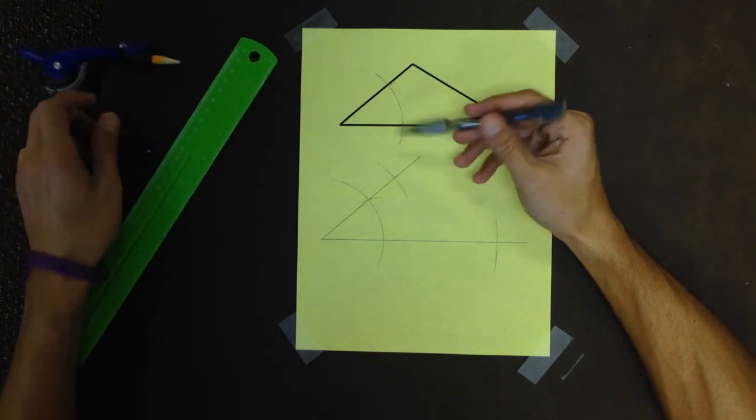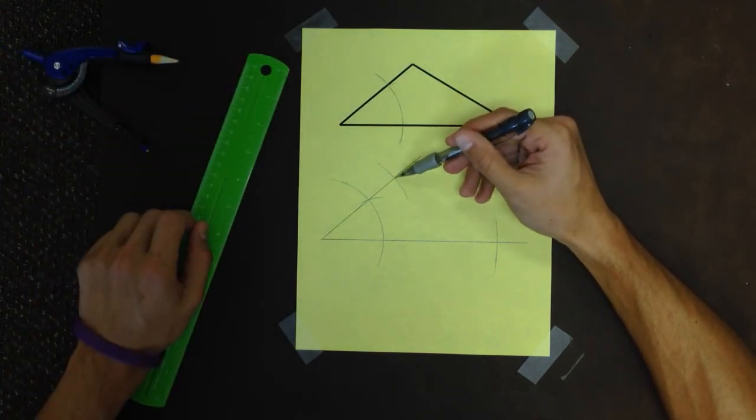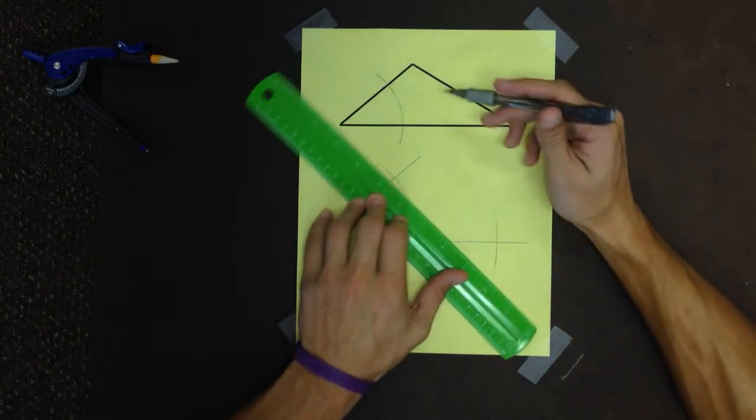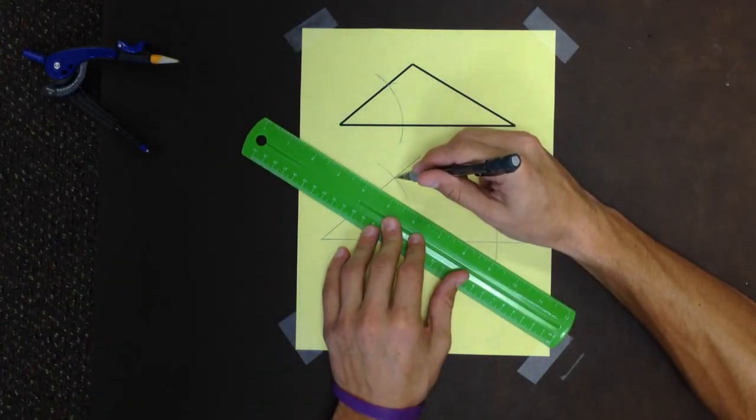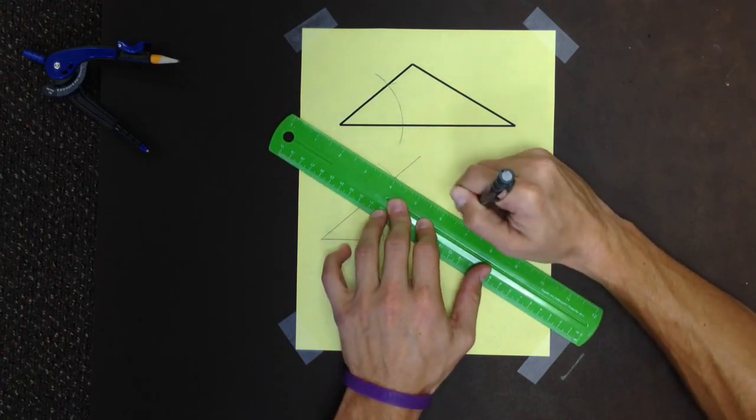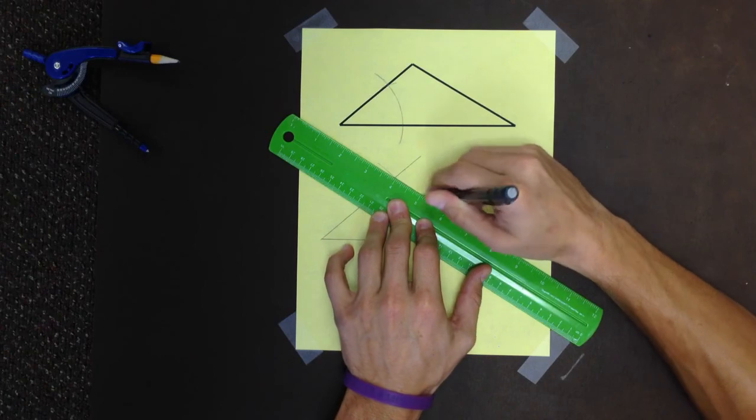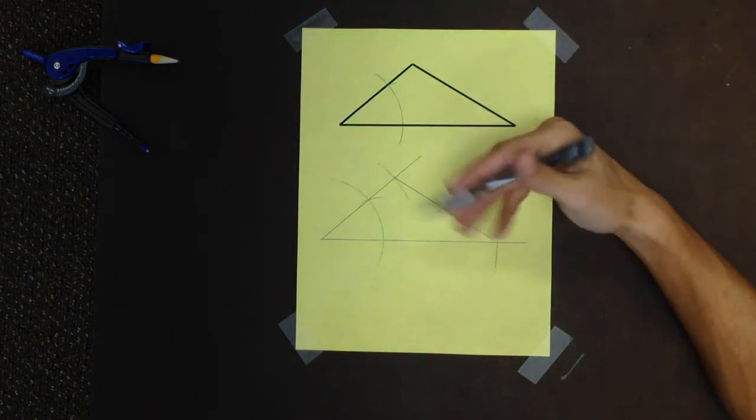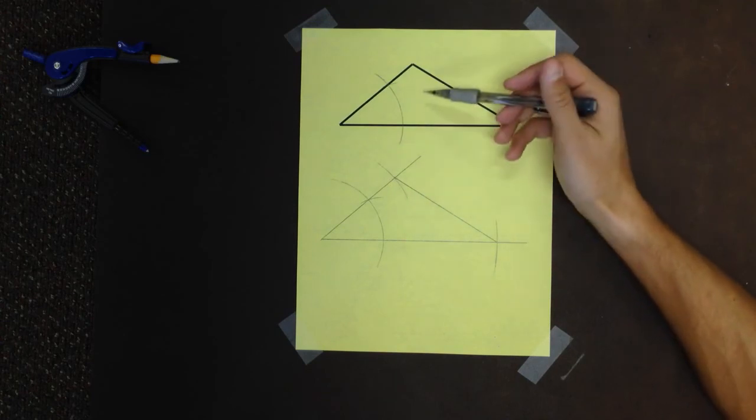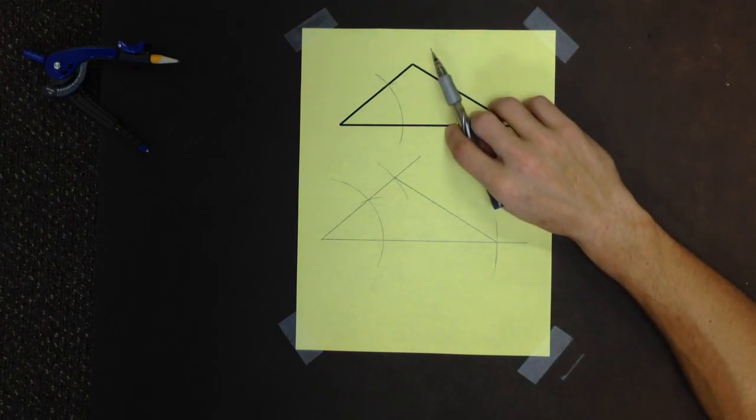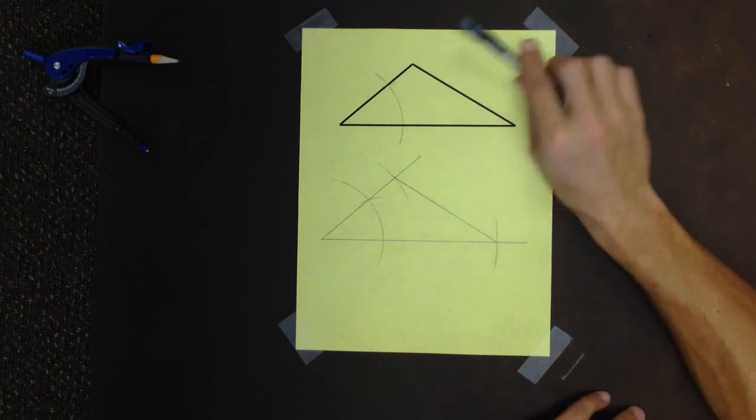There's only one way to complete the triangle. I go from that intersecting point to that intersecting point. I have no choice. It cannot be anything else. I draw a line. And I have constructed a congruent triangle using side angle side congruence.